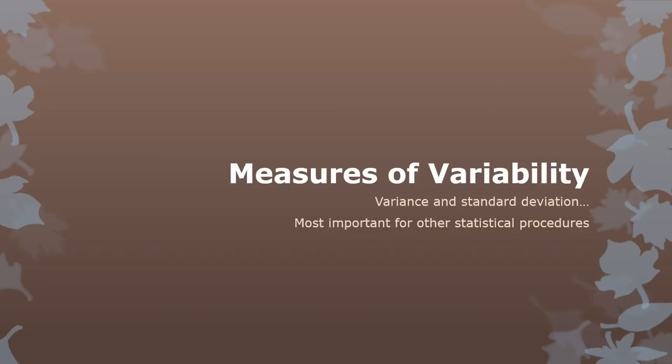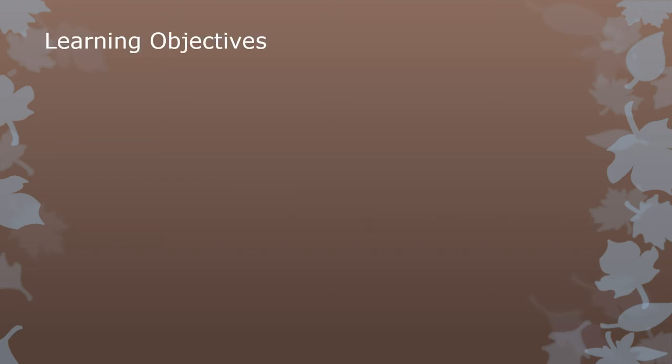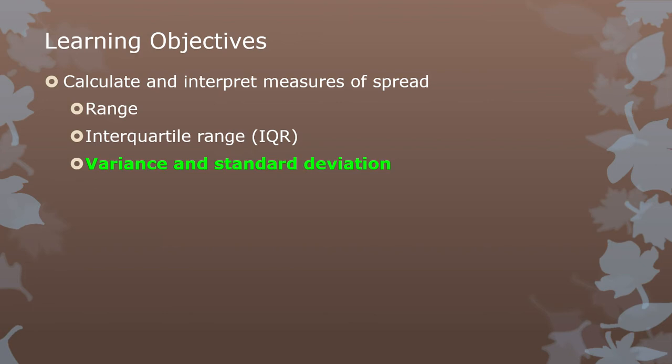Let's talk about the most important, arguably, measures of variability, which are the variance and the standard deviation. The standard deviation is easier to understand, but the variance actually is more important in the long run in statistics, and we'll deal with them both. So we need to understand how to calculate them and how to interpret them.